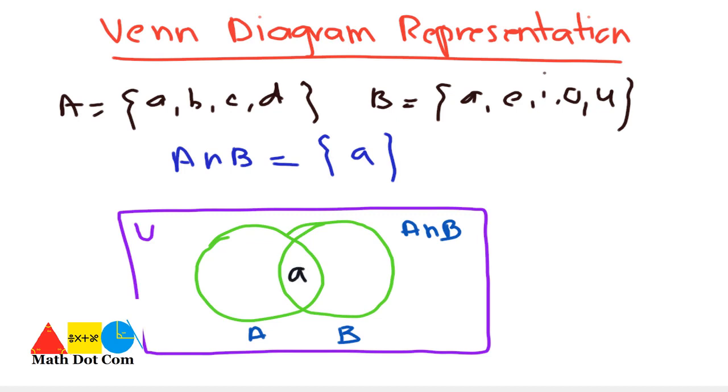And the elements that are not common we will write in their respective regions: b, c, and d, and e, i, o, and u. So the overlapping region will be the shaded one, like this. So this is the Venn diagram representation of overlapping sets.